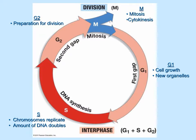In the M phase, we have cell division. Mitosis refers to the division of the nucleus, while cytokinesis refers to the division of the cytoplasm to make two new daughter cells. If the cell cycle were a period of 12 hours, G1 would be about 5 hours, S would be 4.5 hours, G2 would be 2 hours, and the M phase would be 30 minutes.